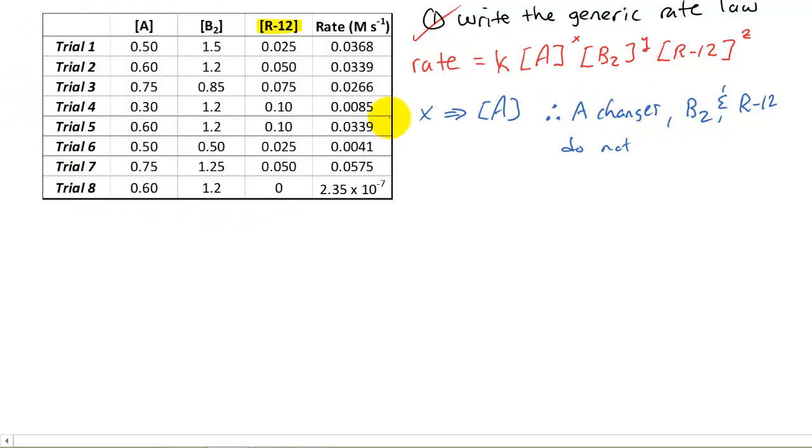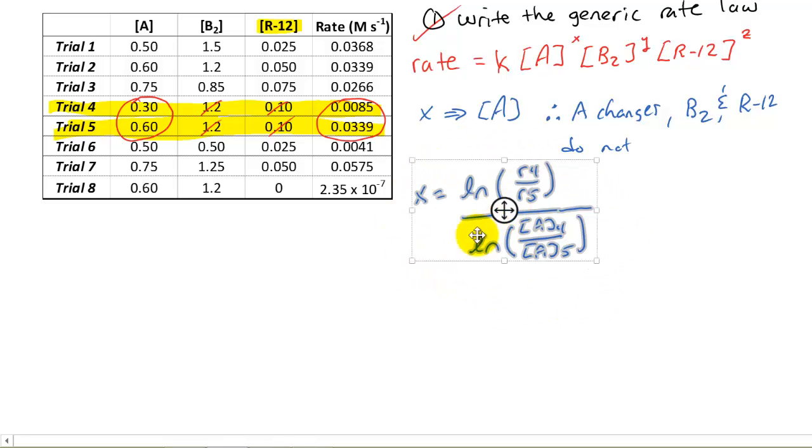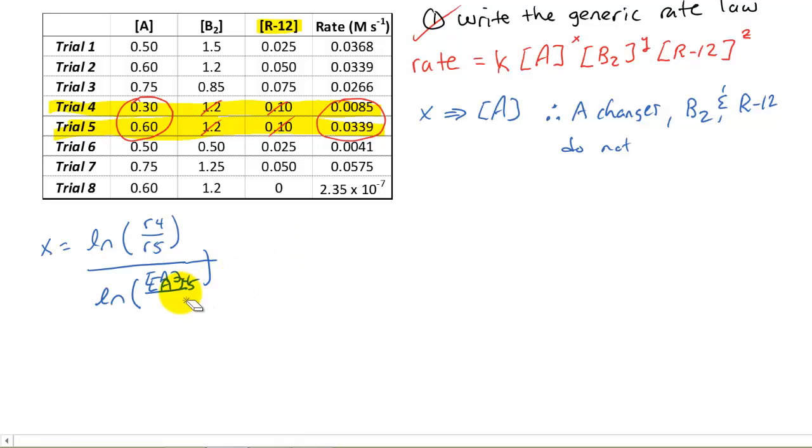Therefore, A changes, but B2 and R-12 do not. That's what we're looking for over here in our trials. So if I look around, I can find this one fairly quickly, and I made it simple this way. But if you look at trials 3 and 4, if you take a look, B is the same, R-12 is the same. And because of that, this change in concentration caused a change in the rate. So we can use this little algorithm that I showed you in class or in another video. And that is X is equal to the natural log of the ratio of the rates. And this would be trial 4 divided by trial 5, divided by another natural log ratio of the concentrations. The concentration of A at trial 4, the concentration of A at trial 5. So all we really need to do, if we're smart, is plug in our numbers.